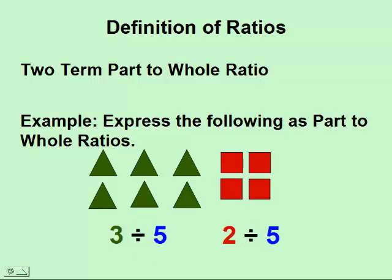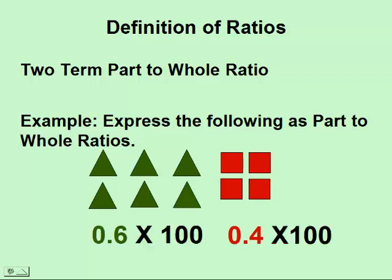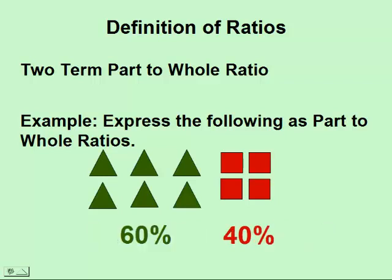Also, if we divide the numerator by denominator, we can convert these to decimals. Three divided by five is point six, and two divided by five is point four. And if they can be written as decimals, if we multiply them by a hundred, that means we can also write them as percentages. So this would be sixty percent triangles and forty percent squares.